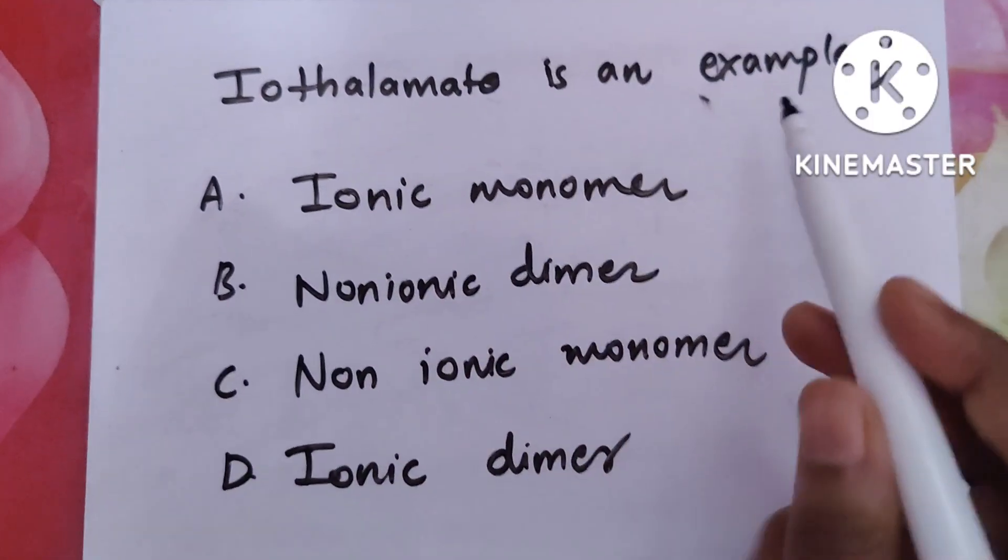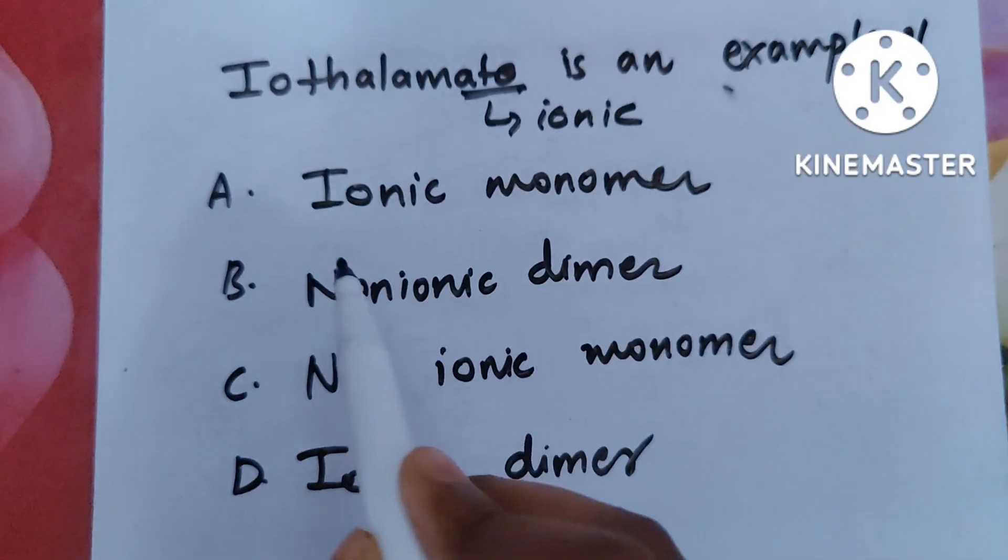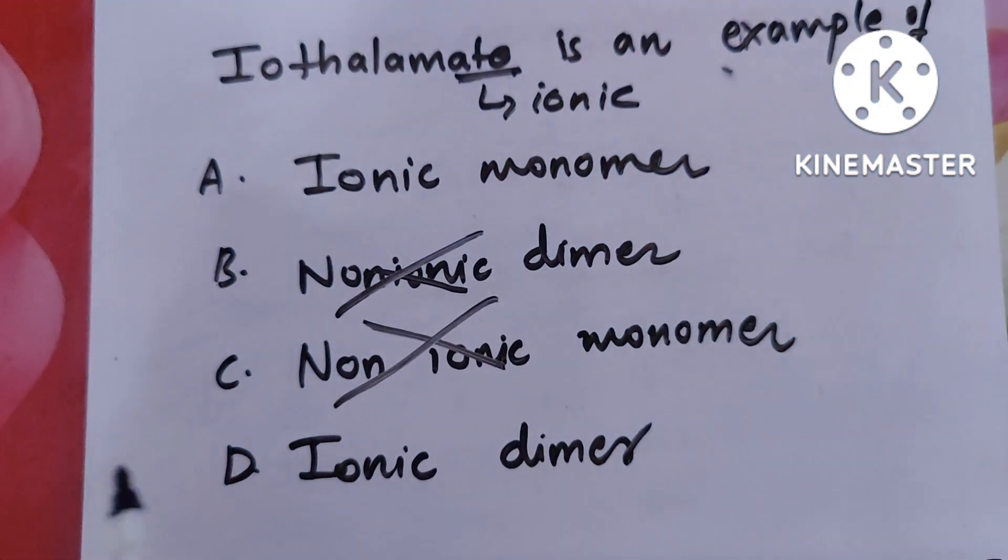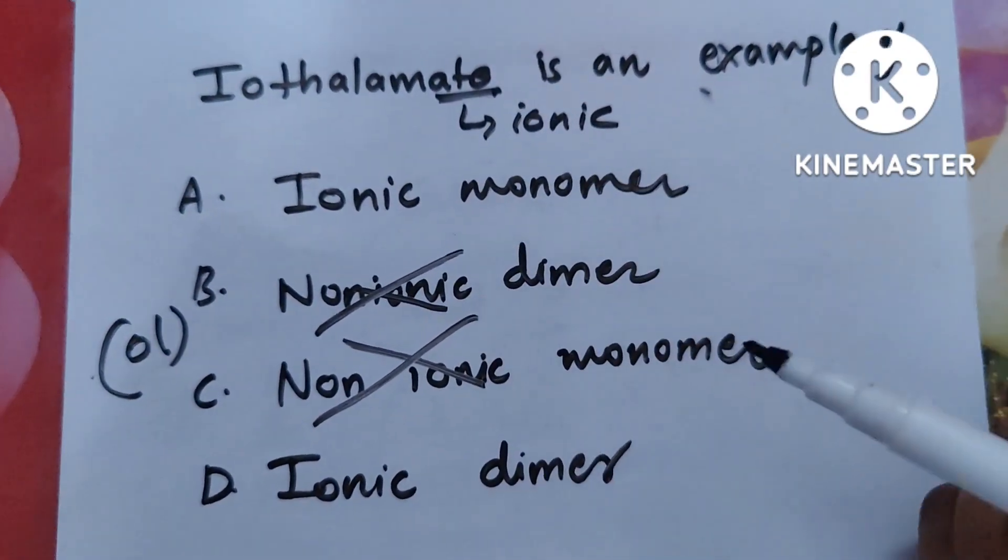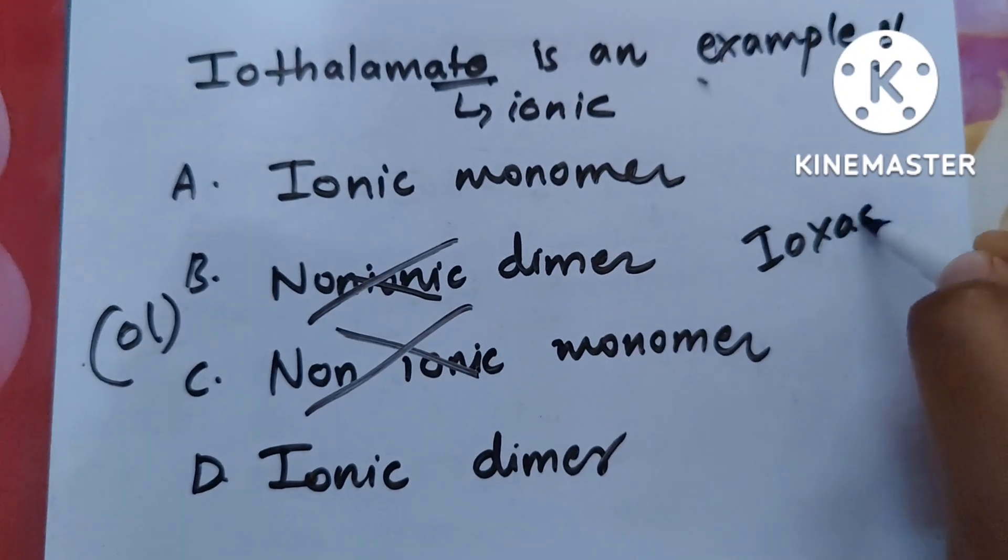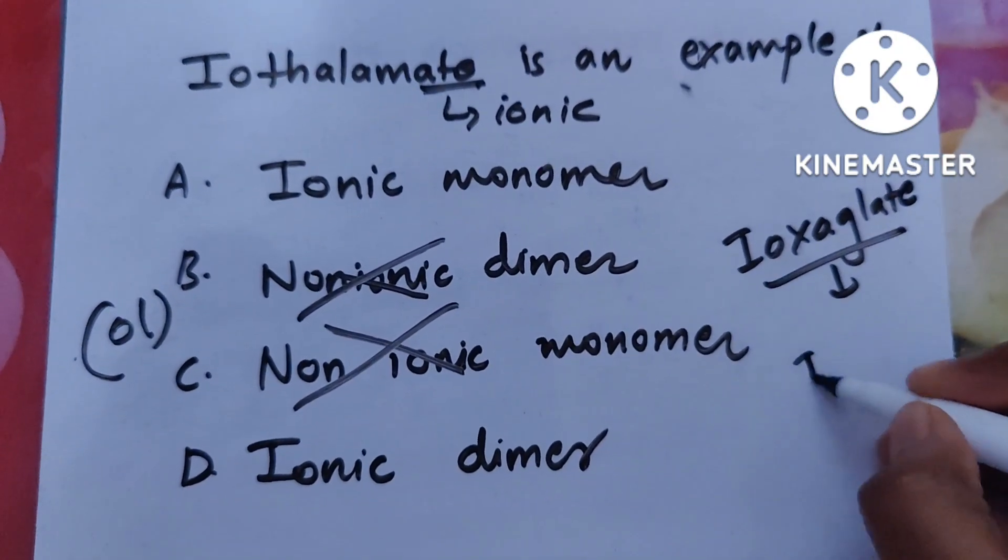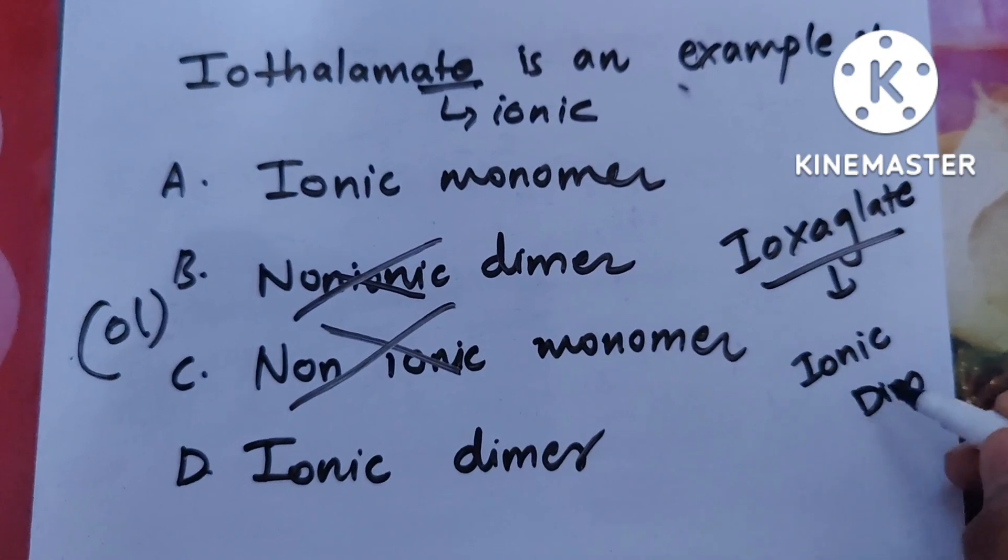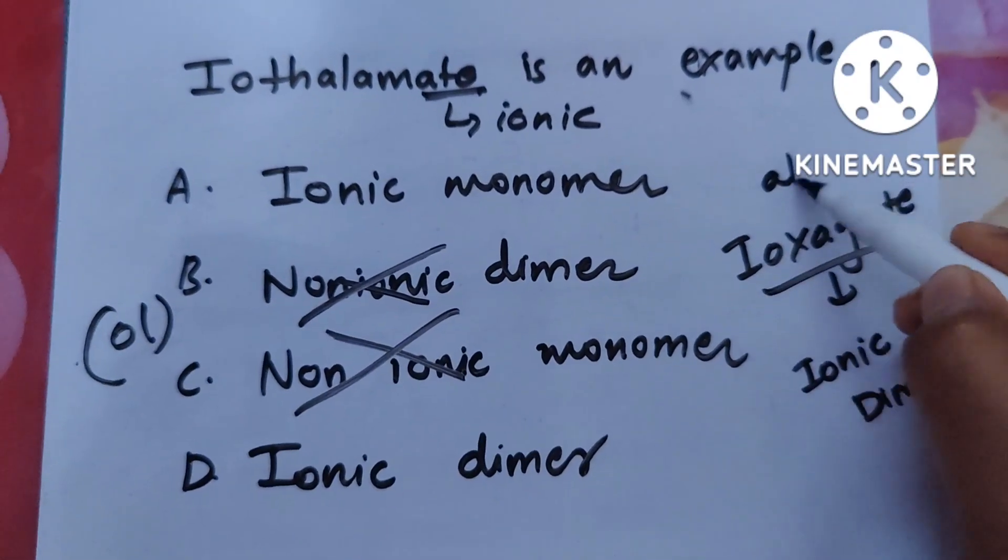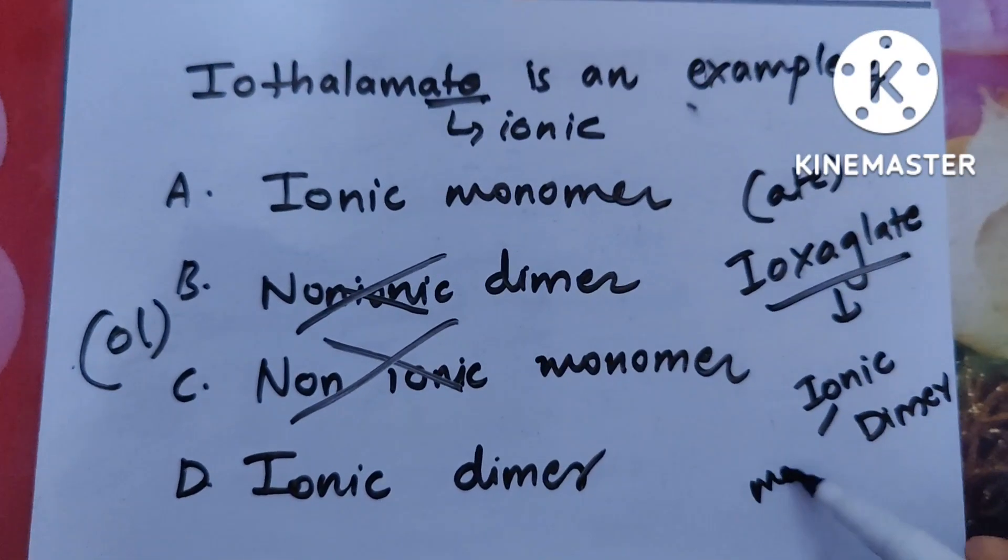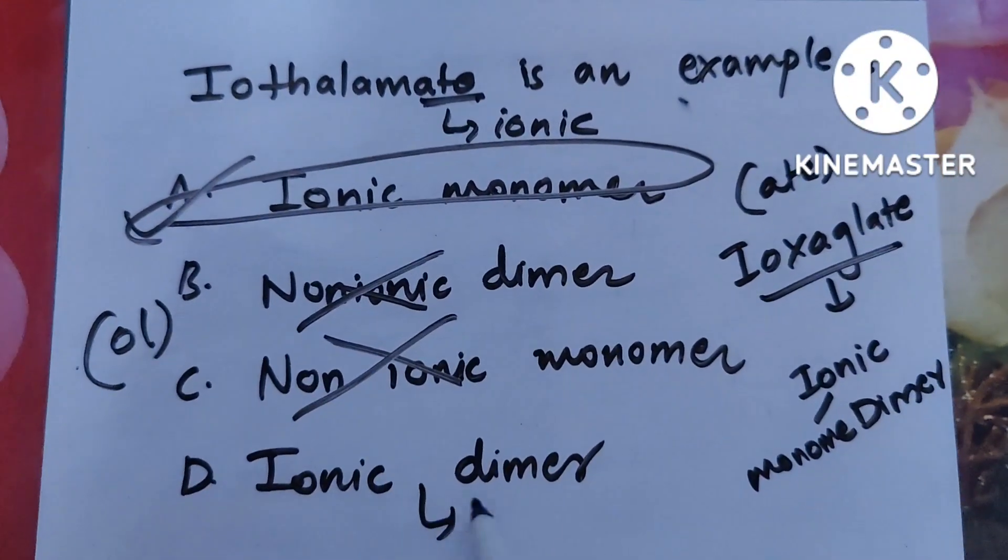Let's solve a few questions now. Iothalamate is an example of what? First, you found 'ate' in it. 'Ate' meaning ionic, so non-ionic options are ruled out. Iothalamate - ioxaglate comes in the second one, meaning ionic dimer. Except for ioxaglate, remaining all 'ates' come under ionic monomer. So the answer is ionic monomer.